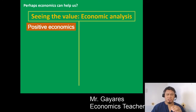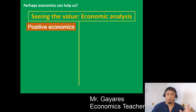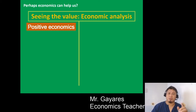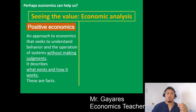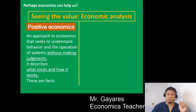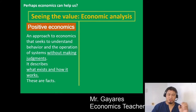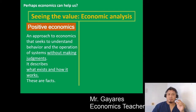Number one is positive economics. When you say positive economics, it doesn't mean something good. Positive means numbers, quantifiable, or something that can be proven. Positive economics is a form of analysis wherein you use economics scientifically to describe something, to quantify something, to prove something. It is an approach to economics if you want to understand behavior and operation of systems without making judgments. These are facts, just descriptions. No judgment — you just describe what exists and how it works.